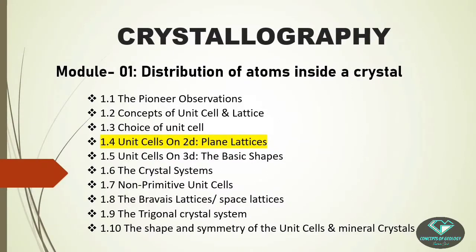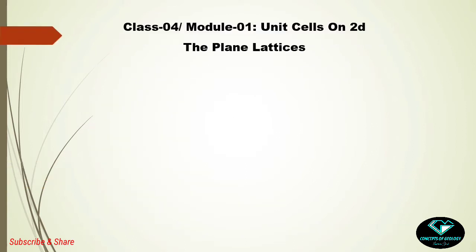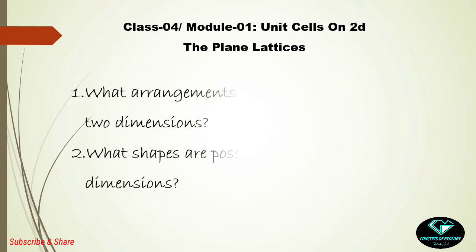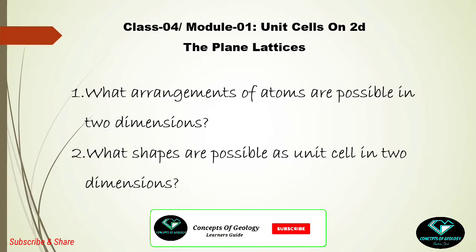Hello friends, welcome to Concepts of Geology. We were learning crystallography, and in the last classes we learned about the correct choice of unit cell when a lattice is provided — we have done three classes in this series. Today, on the fourth class, we are going to learn about unit cell shapes in two dimensions, called plane lattices. Our agenda is to find out what arrangements of atoms are possible in two dimensions and what shapes are possible as unit cells.